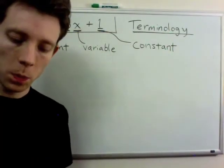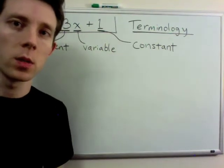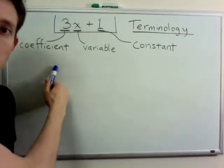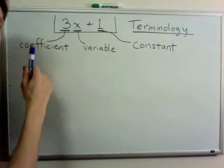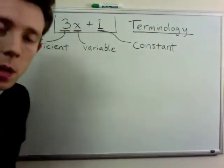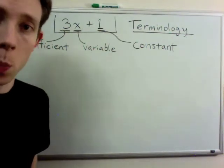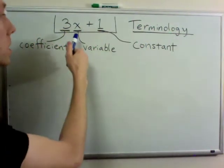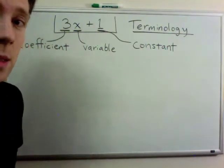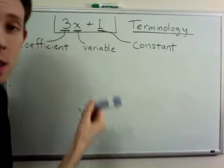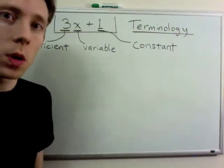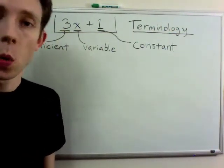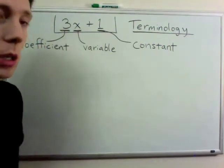I'd like to mention a few pieces of terminology used in algebra. The first word is coefficient. A coefficient is a number that is multiplied by a variable or a group of variables. In this case, 3 is the coefficient in the term 3x. The x is a variable — a letter that represents some number that we maybe don't know the value of, or a value that might change.